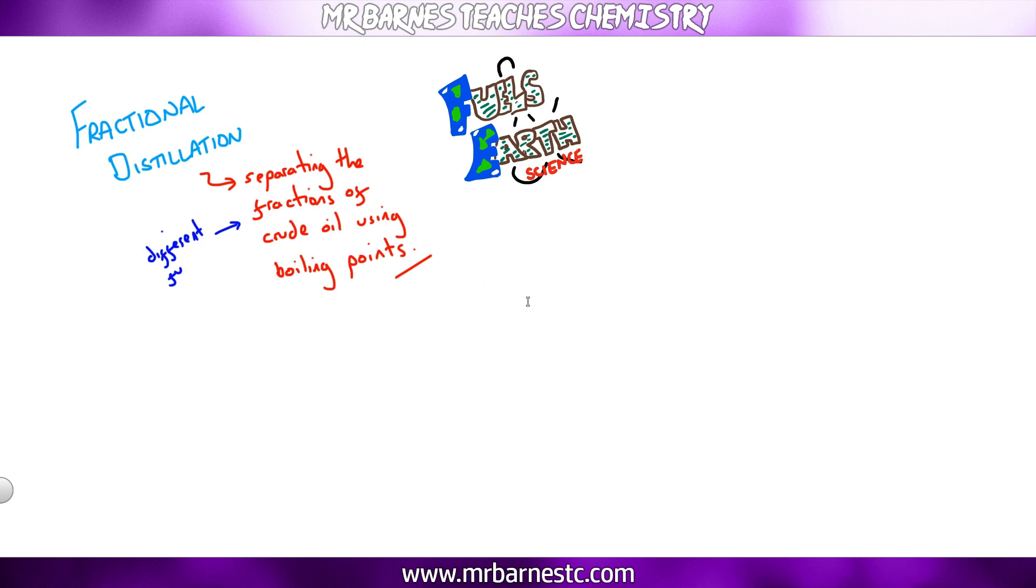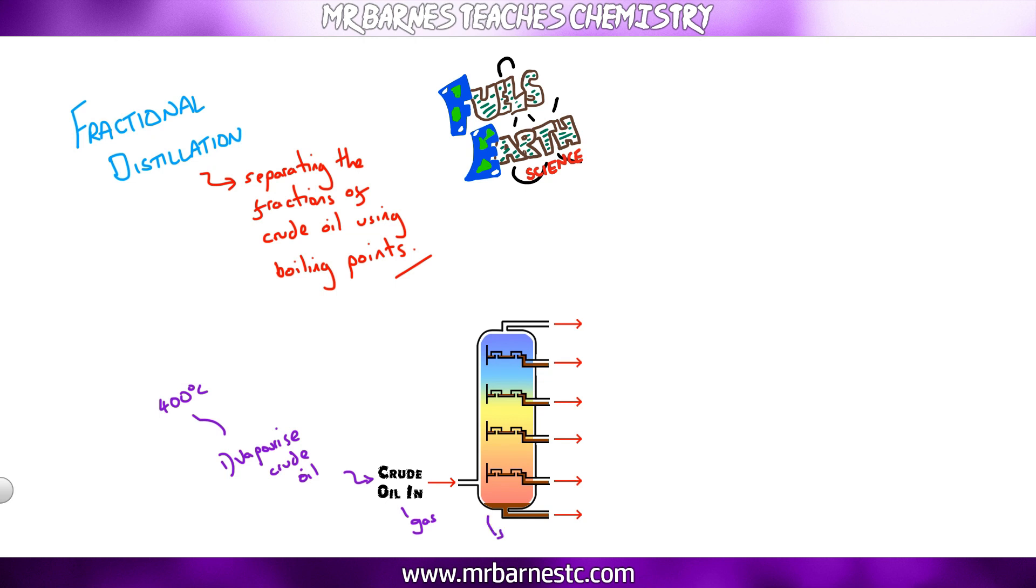If we have a look at a fractionating column, the first thing we need to do is take our crude oil and vaporize it. Heat it up to about 400 degrees C so everything turns into a gas. We're going to add it into our fractionating column and our column is hotter at the bottom and cooler at the top. So what will happen is when our gas goes in there, straight away our bitumen will condense and turn back into a liquid so it can be collected.